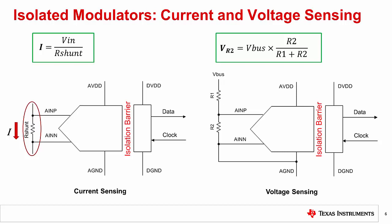TI offers isolated modulators with both a ±50 millivolt and a ±250 millivolt input range. In addition, many of these devices include a variety of integrated features such as an internal voltage reference, internal clock, and Manchester coded or uncoded bitstream output options.